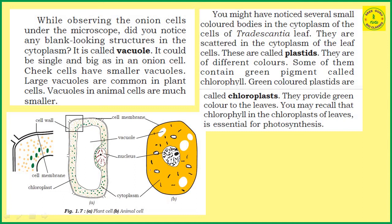In addition to these structures, while observing the onion cells under the microscope, did you notice any blank-looking structures in the cytoplasm? Along with the cytoplasm, we can also identify some empty places. Yes, we can find empty places in these onion peel cells. This empty place is called a vacuole.